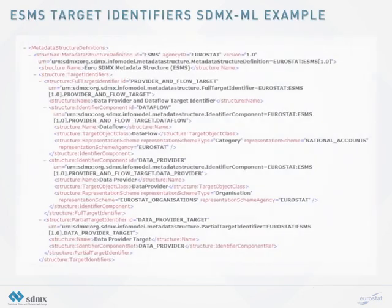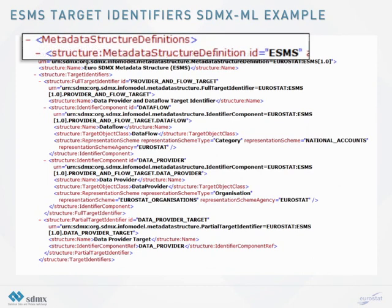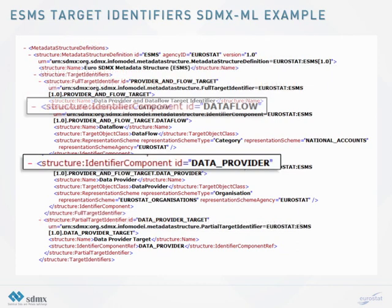This file shows an example of the SDMX ML target identifiers that have been described previously. The metadata structure definition is declared with an ID, ESMS. Then both the target identifiers are defined and the identifier components with their linked representations.